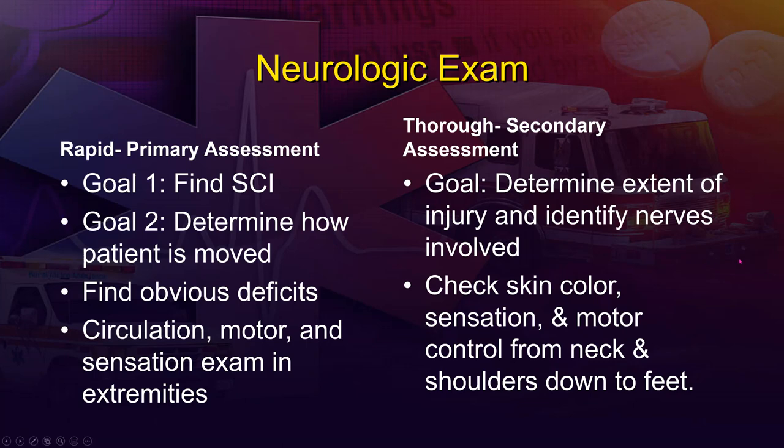In the rapid neurologic exam during primary assessment, the first goal is to identify whether the patient has a suspected spinal cord injury as you approach — determining if you need to hold manual C-spine. Next, determine how the patient will be moved from the scene, getting CNS assessments before placing them on a backboard. Get a baseline before moving them. Find obvious deficits — like grip strength or pushing against your feet — and complete circulation, motor, and sensory exams in all extremities, noting findings on frequent reassessments.